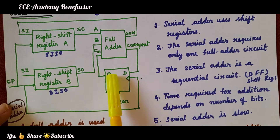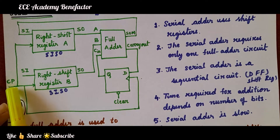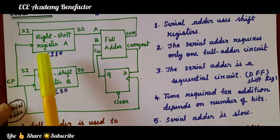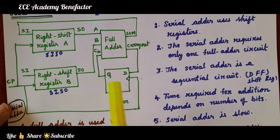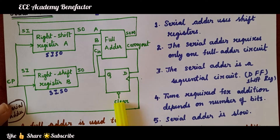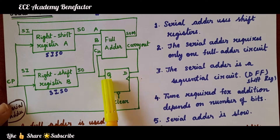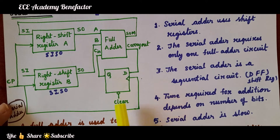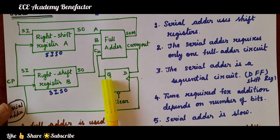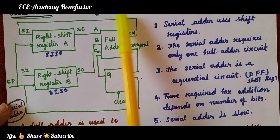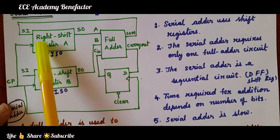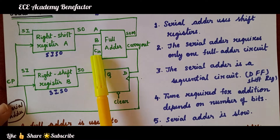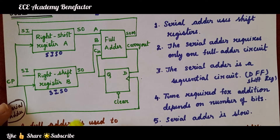Right shift register A, right shift register B, and the D flip-flop are all given the same clock pulse. The clear signal is used to make the D flip-flop output initially 0, because initially the carry will be 0. Sum is connected to the serial in of right shift register A, carry out is connected to the D flip-flop, and the output of the D flip-flop is connected as C in.